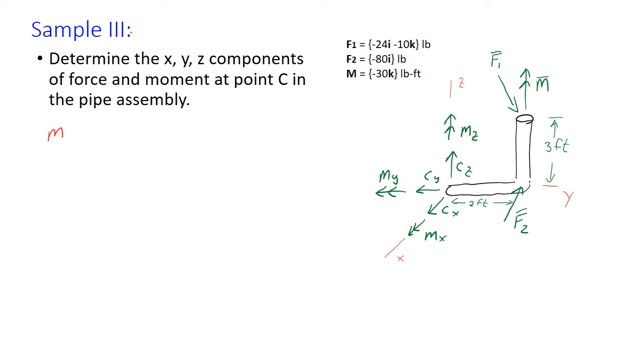Now we solve M2 which is equal to our position vector R2, which is from C to point 2 here, cross F2 which is given. R2 is equal to 2 feet in the j direction, so 2j hat. And M2 is equal to 2j cross minus 80k pound-feet, and that results in 160 magnitude in the k direction, pound-feet.